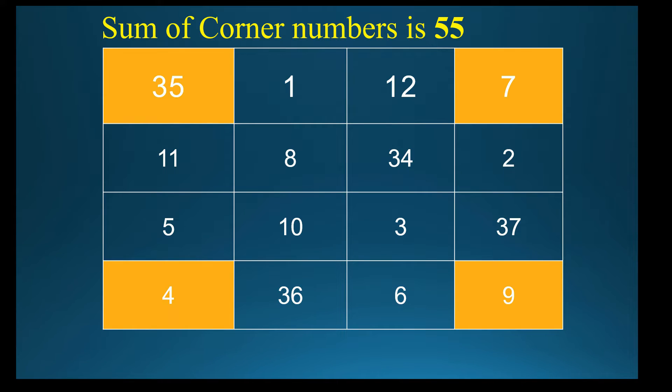Now you take the corner numbers, that is 35, 7, 9, and 4. Add these four numbers, again you will get 55.